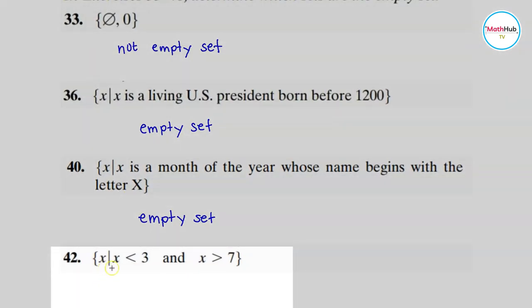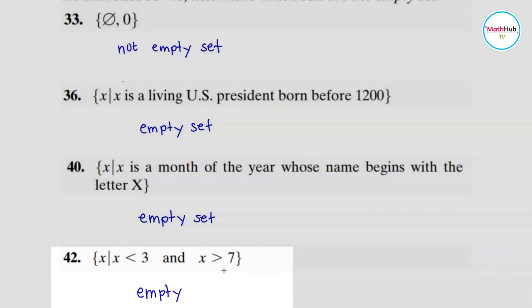Number 42: the set of all x such that x is less than three and greater than seven. Is there a number that is both less than three and at the same time greater than seven? No. The numbers less than three are zero, one, negative one, and they are all less than seven. There is no number that is both less than three and greater than seven, so this is again an empty set.